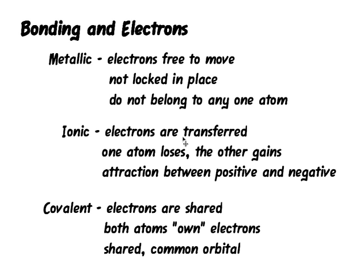The first type is metallic bonding. In metallic bonding, like they said in the videos, the electrons are free to move around. They have empty p orbitals, so the electrons can jump from one atom to the next. They aren't locked down in any one place, and the electrons don't belong to any one atom.